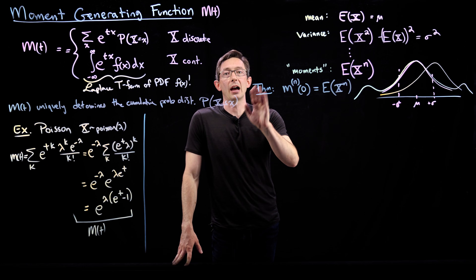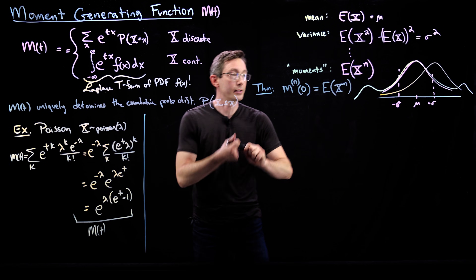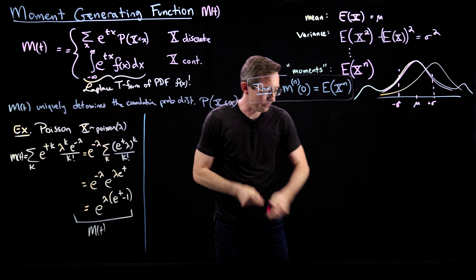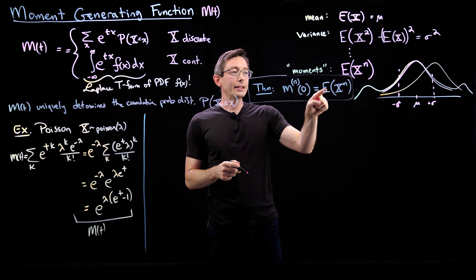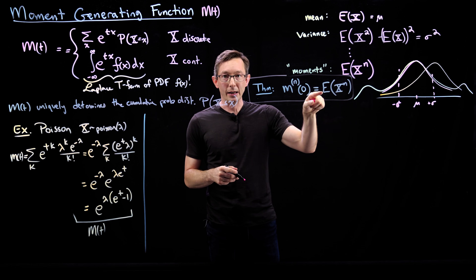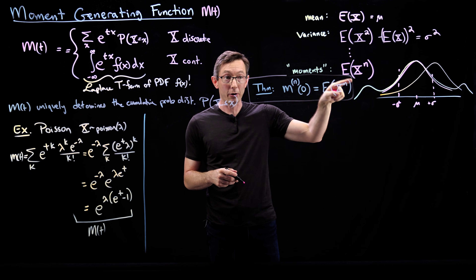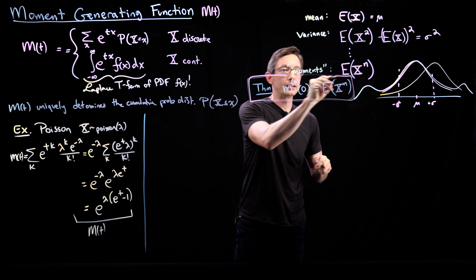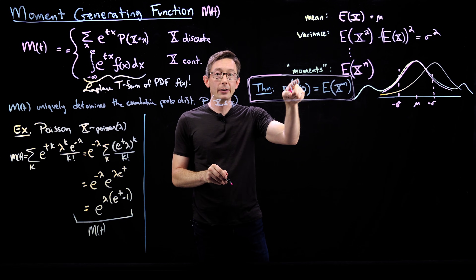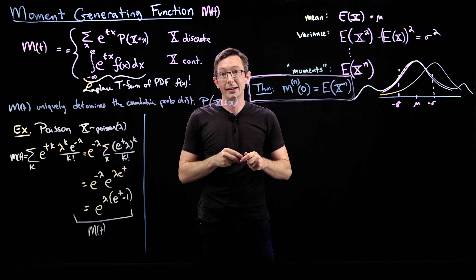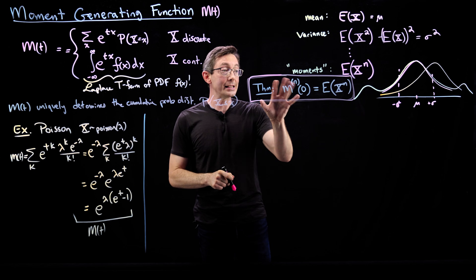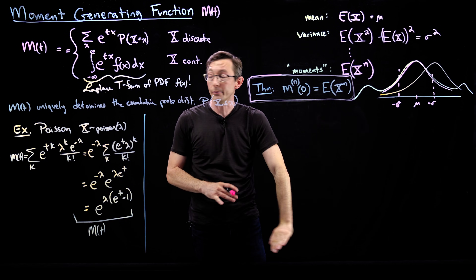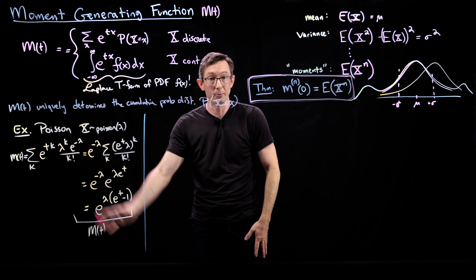So specifically, I wrote down this theorem — I'll circle this in pink because this is what we're going to talk about today. This theorem is that you can get the nth moment, the expectation of x to the power n, where x is a random variable, by taking the nth derivative of your moment-generating function and evaluating that at zero. This is a useful way of computing these moments. I'm going to prove this theorem, and then give you an example on the Poisson distribution.